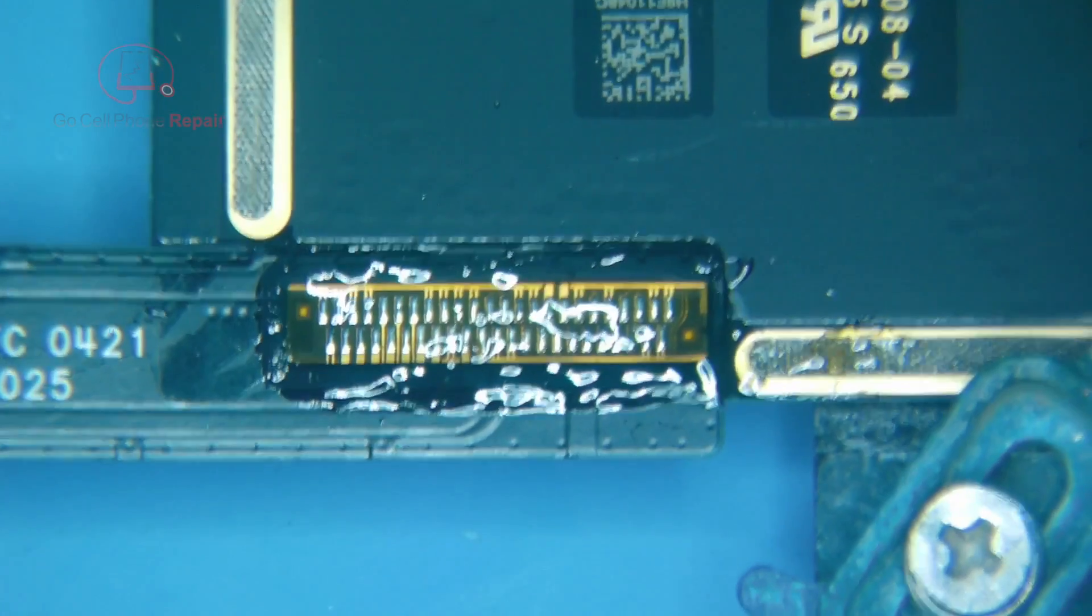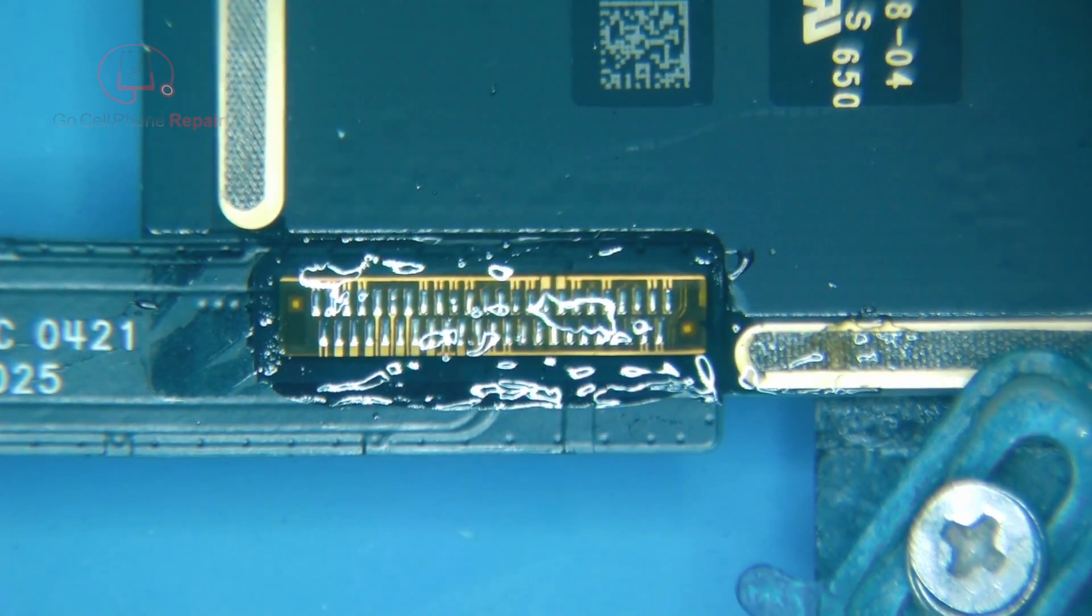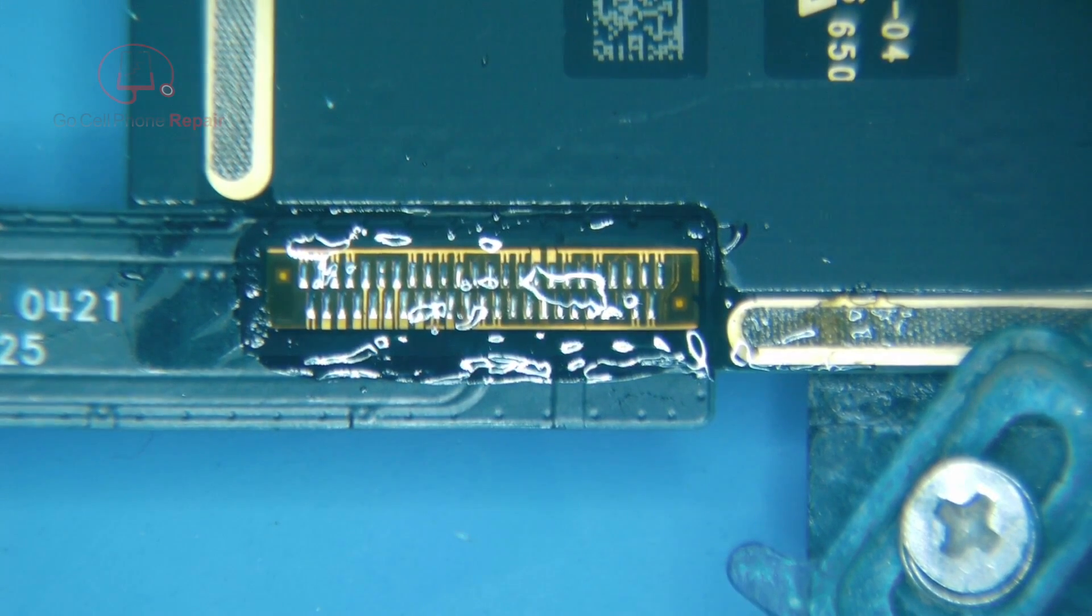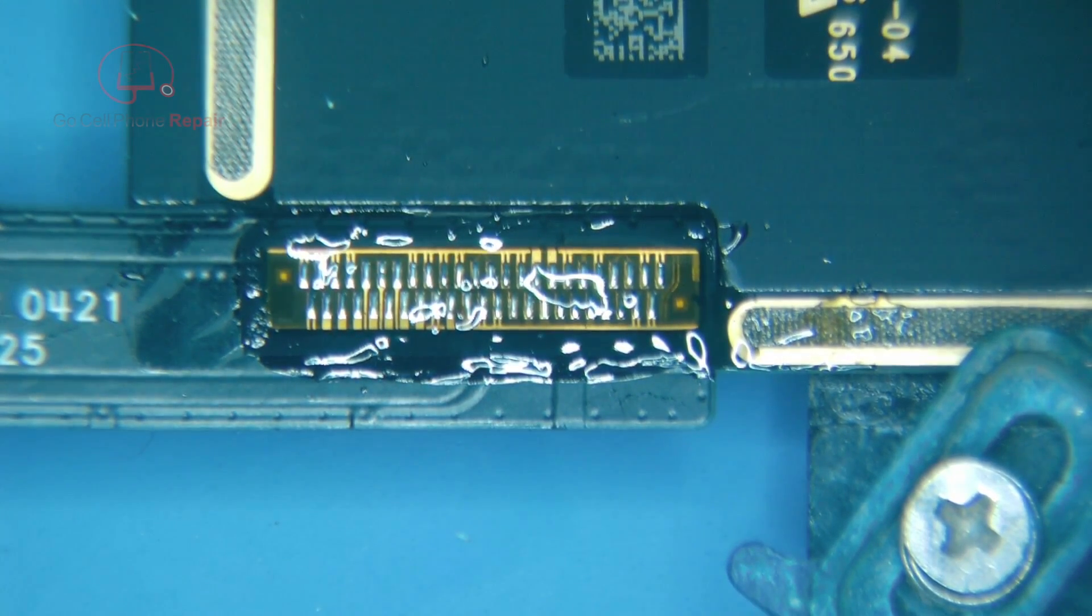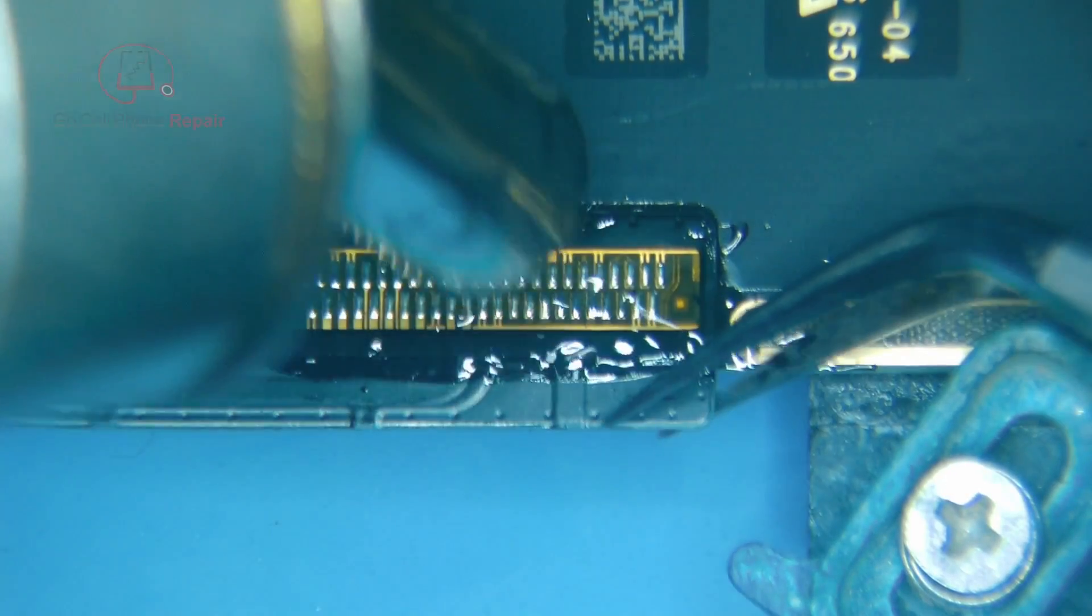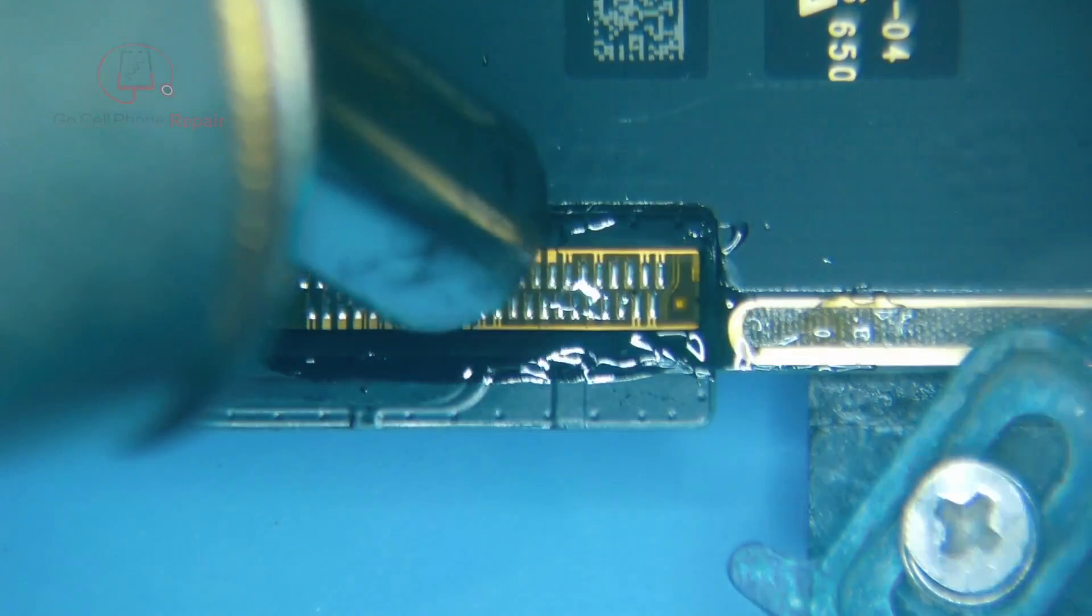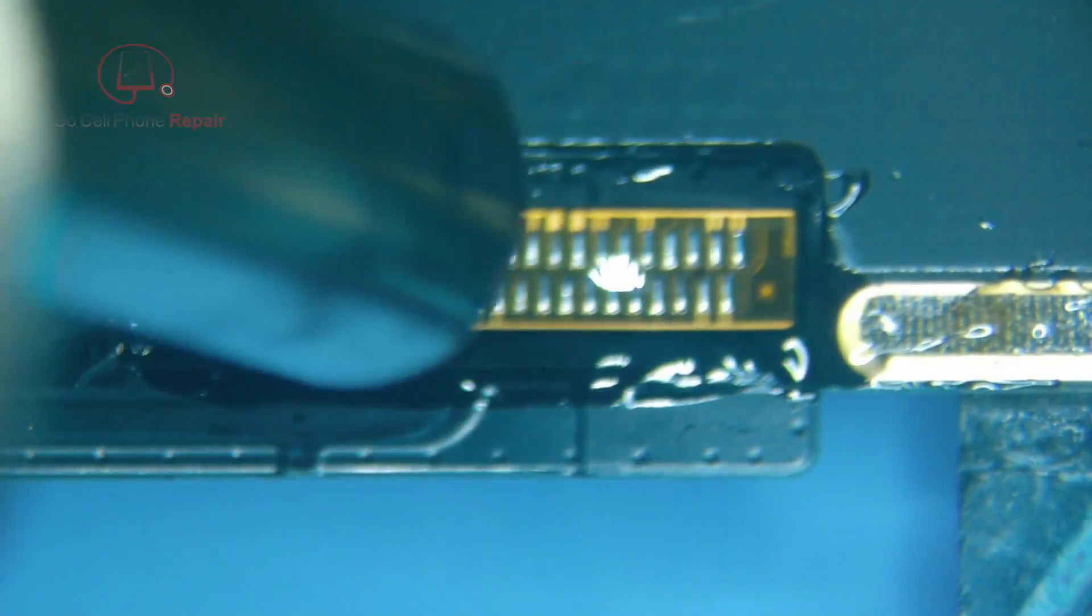And instead of using our iron, I am actually going to use some hot air. And I'd use the temperature that I normally do for removing motherboard components, which is about 430 degrees Celsius, but I'm going to turn my airflow up to about 70 liters per minute. And then we're going to get a pair of tweezers. And as soon as we see the solder start to melt, we can gently lift from here. So you want to keep an eye on those solder joints. Wait until they liquefy.